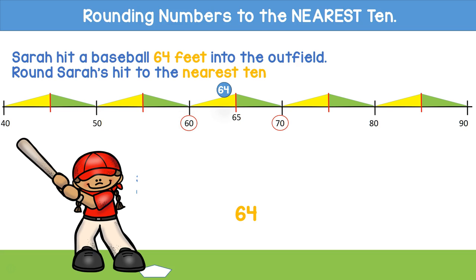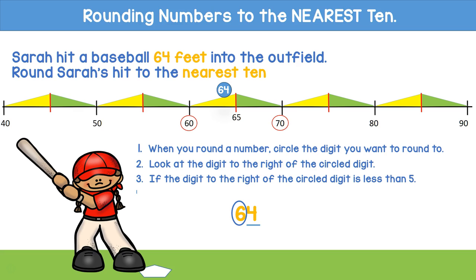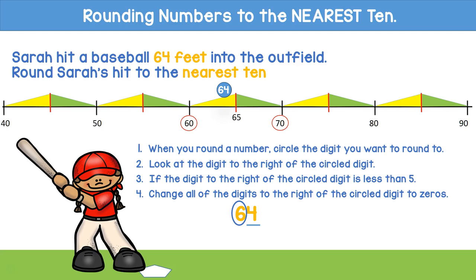Now let's use the step-by-step method. First, when you round the number, circle the digit you want to round to. Since we're rounding to the nearest ten, we'll circle the 6. Next, look at the digit to the right of the circled number. If the digit to the right of the circled digit is less than 5, keep the circled digit the same and change all of the digits to the right of the circled digit to zeros. 64 rounds to 60.